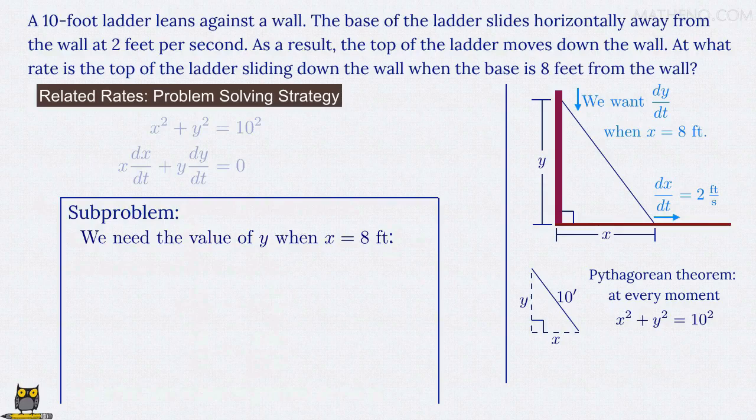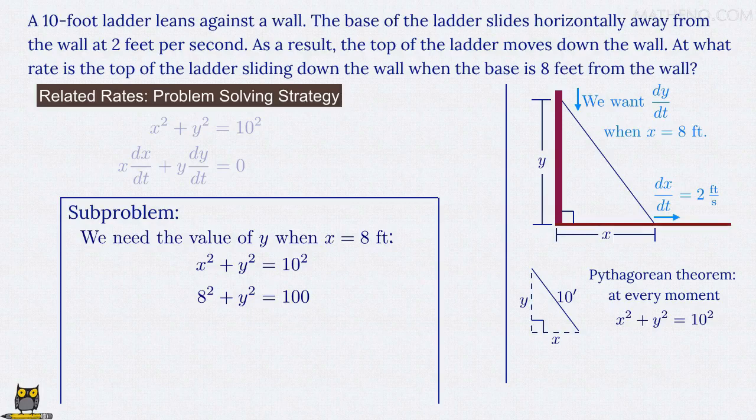Remember that the Pythagorean theorem holds at every moment as the situation progresses, so at every moment x squared plus y squared equals 10 squared is true. So when x equals 8 feet, we have 8 squared plus y squared equals 100, or since 8 squared is 64, 64 plus y squared equals 100. That means y squared equals 100 minus 64, which is 36, and so y equals the square root of 36, which is 6. And so y equals 6 feet when x equals 8 feet. And that completes our little subproblem.